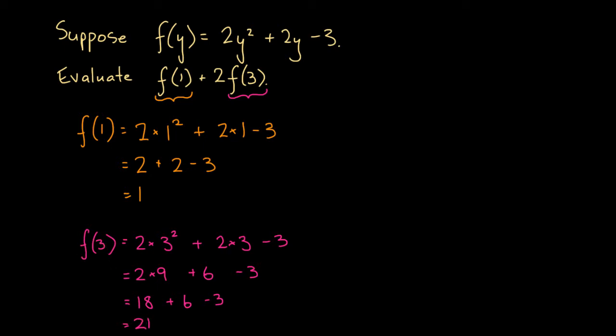So what we've found so far is that we can rewrite this expression as f of 1, and we'll go back to yellow, plus 2 times f of 3. That's the same as saying 2 times f of 3. So 2 times f of 3, and we'll write f of 3 in pink.